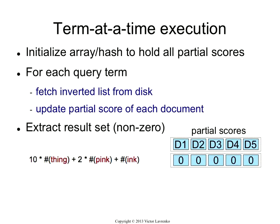So that was document-at-a-time execution. Now term-at-a-time tries to flip the problem on the other side and do it in a more efficient way. The basic idea here is instead of trying to merge lists, you're going to incrementally compute the scores for all the documents, but update it one term at a time. Document-at-a-time computes a score for a document, emits that score, and then moves on to the next document — merging lists, popping the document, computing the score, emitting it, and incrementing the pointers. Term-at-a-time, you're done with that document before you move on to the next one.